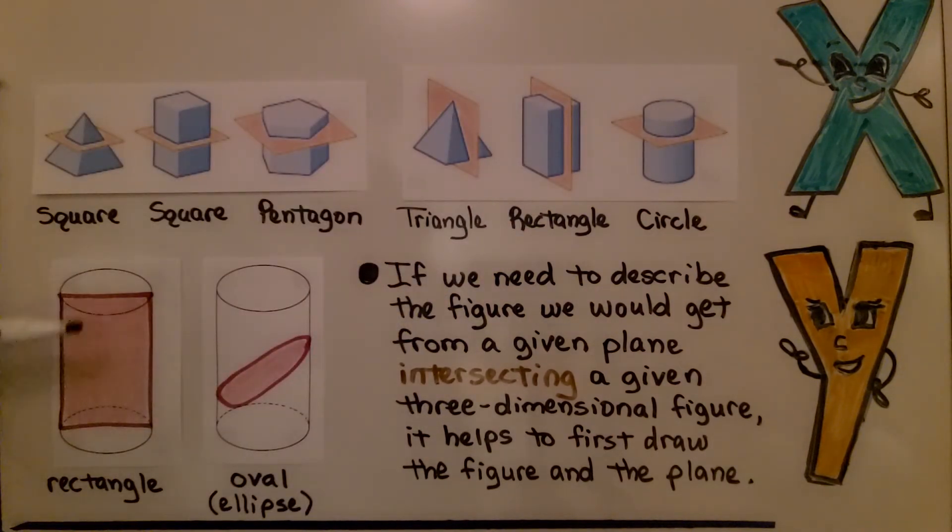A cylinder can even have a rectangular cross section if we come straight down vertically. Or an oval, an ellipse if we go on an angle.